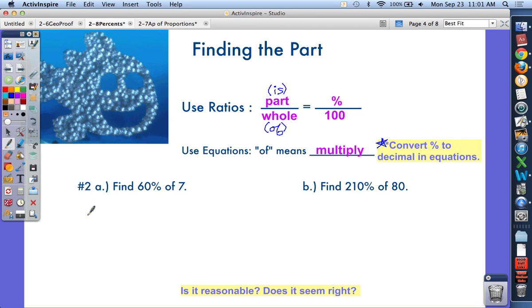For A, let's do a proportion. If I want to find 60% of 7, 60 is my percent, always a comparison to 100. The of 7 means 7 is my whole. I don't know what number that is, so I'll put an X there. Solving a proportion, we can cross multiply as a shortcut. So we have 100X equals 420.